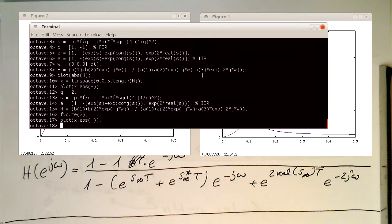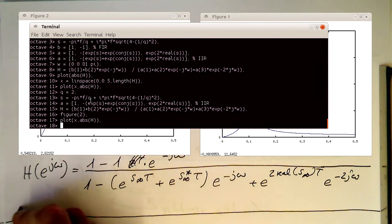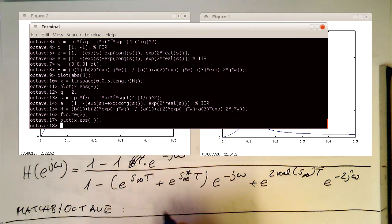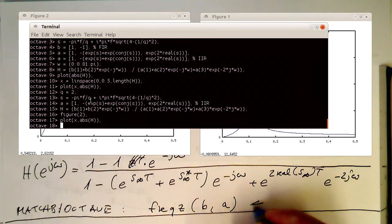Okay, so one might wonder if we need to do this all the time, all these mathematical steps here, and Octave or MATLAB comes to rescue. So in MATLAB and Octave, there's a command called freqz, and this just takes our FIR and IIR coefficients and creates us a frequency response.